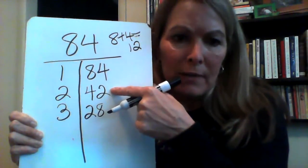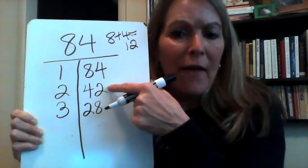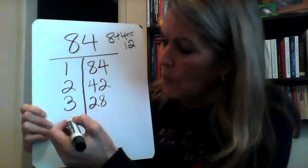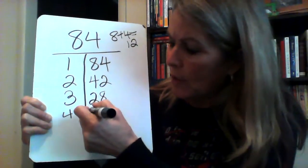Well, since you can half this number, you're going to have a 4. So you have a 4 times half of this, which is 21.